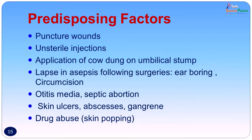The predisposing factors are that the wound must be a tetanus-prone wound. Puncture wounds with great depth and anaerobic conditions facilitate germination of the spores. Unsterile injections, application of cow dung to the umbilical stump, lapse in asepsis following surgeries such as ear-boring and circumcision, otitis media, septic abortions, skin ulcers, abscesses, gangrene, and skin-popping in drug abuse are all predisposing conditions.